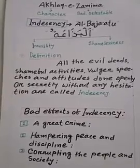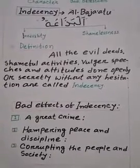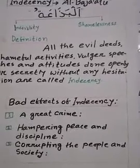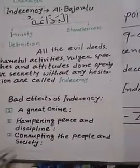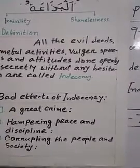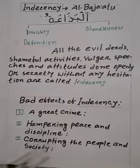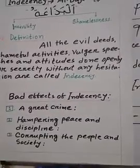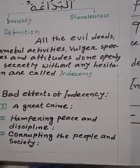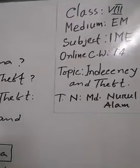Second: hampering peace and discipline. He or she will face different kinds of problems with social peace and discipline. Nobody will cooperate with them. Third: corrupting the people and society. If anyone is involved in indecency or indecent activities, they corrupt the people and society. The people will not love them - instead, people will hate them.